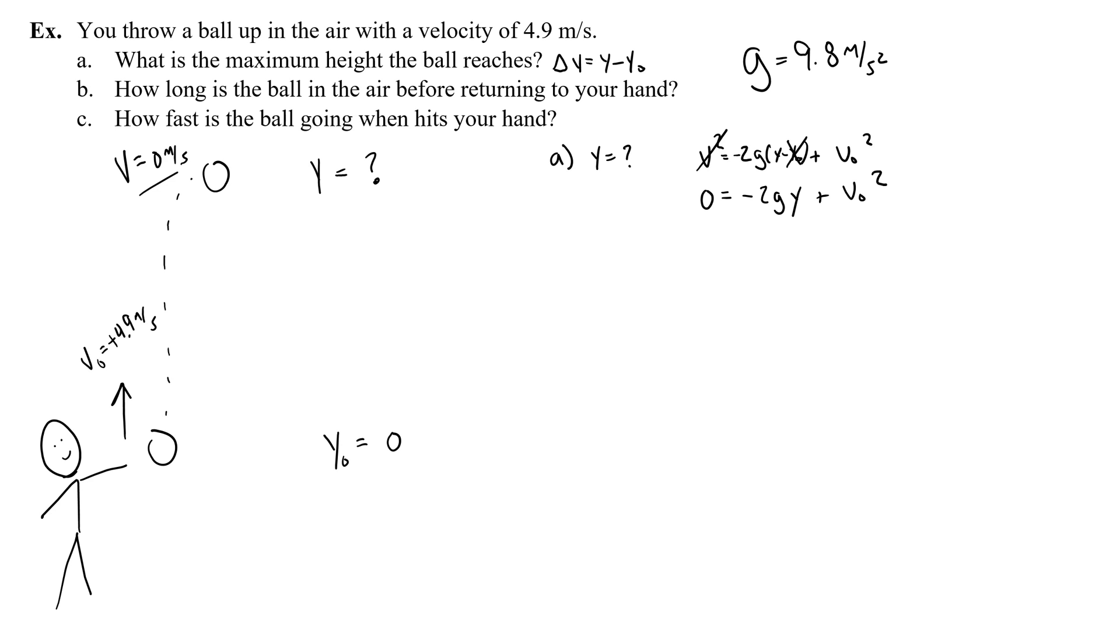So I plugged in things that are zero. And now I'm going to rearrange this to try and solve for y, the variable that I want to find. So to find that y, the height above the position that you threw, first going to add 2gy to both sides. Then I'm going to divide both sides by 2 and g, because the 2's cancel and the g's cancel. So to find the height, I take the initial velocity squared and I divide it by 2 times g.